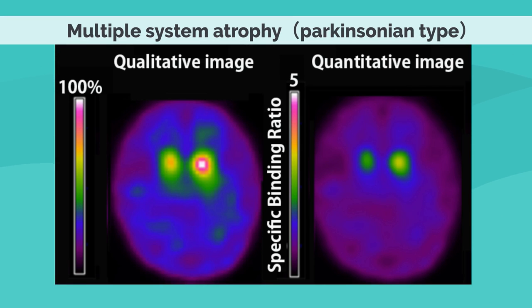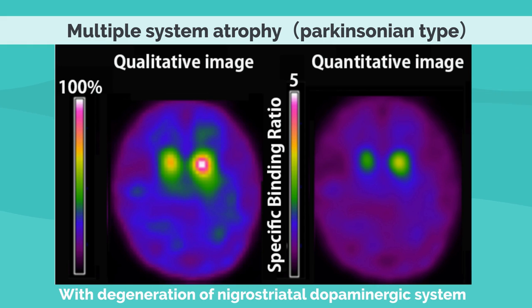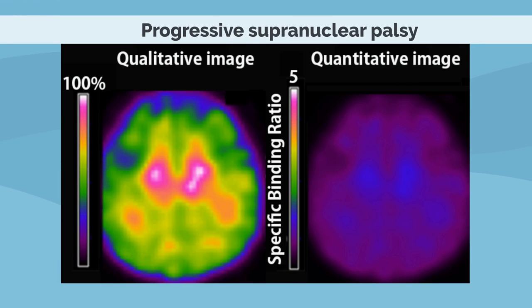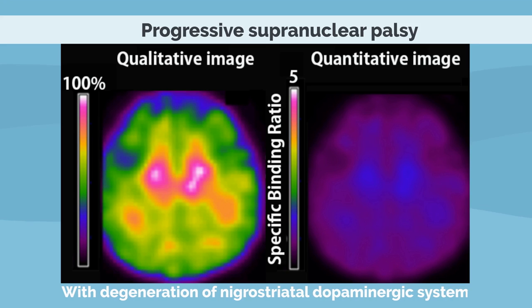Multiple system atrophy, parkinsonian type, also shows degeneration of the nigrostriatal dopaminergic system, with a distinct decrease in striatal accumulation seen mainly in the right putamen. This strong left-to-right difference is related to differential side-to-side degeneration of the striatum itself. In progressive supranuclear palsy, there is often little left-right difference, and striatal accumulation tends to be strongly reduced not only in the putamen but also in the caudate nucleus.